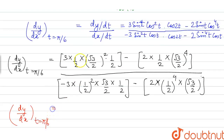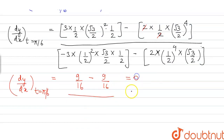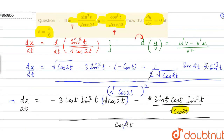Solving the numerator: 3 × (√3)² = 3 × 3 = 9, denominator factor 4 × 4 = 16, giving 9/16. The second term: (√3)⁴ = 9, divided by 16, giving 9/16. So numerator = 9/16 − 9/16 = 0. Therefore dy/dx = 0 at t = π/6, which proves the required result.